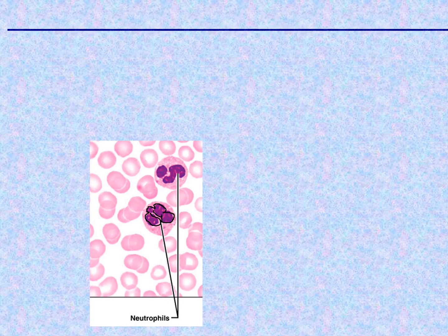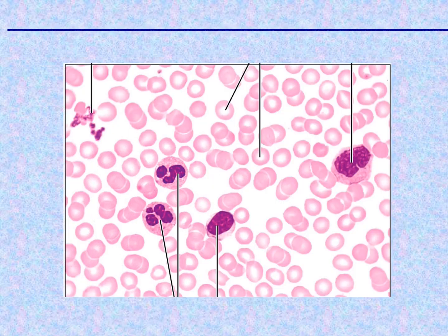So in a blood smear, you have a monocyte, a lymphocyte, a couple of neutrophils, some clumped platelets, and the rest are all red cells.